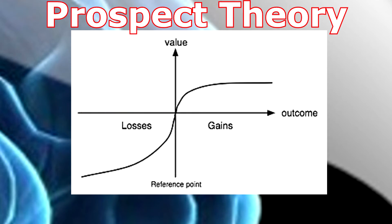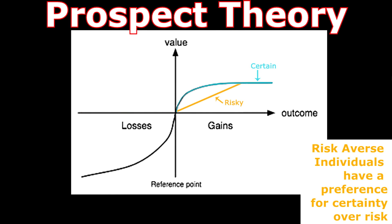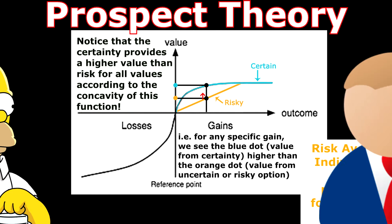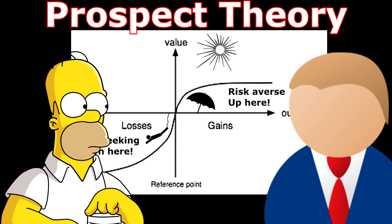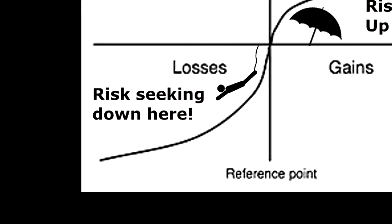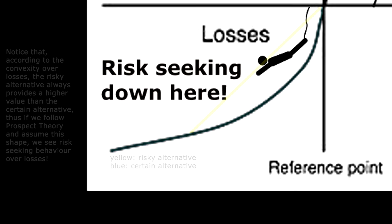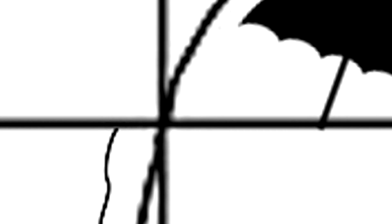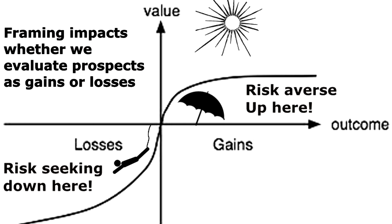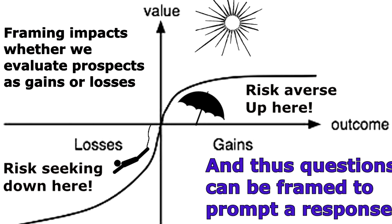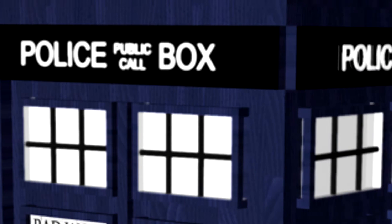Someone is risk-averse when they prefer certainty over risk, and thus require a premium to partake in risky activities. Someone is risk-seeking if they prefer risk to certainty, and thus require a premium to remove risk. This means that the way a question is asked can impact the answer provided, as it impacts whether people evaluate outcomes as gains or as losses.